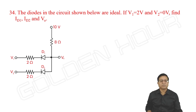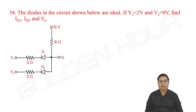Look at this question. The diodes in the circuit shown below are ideal. If V1 is equal to 2 volts and V2 is equal to 0 volts, find ID1, ID2, and V output.